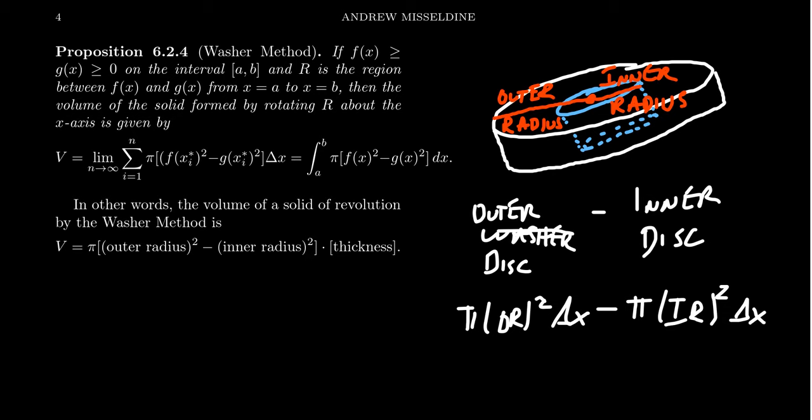And so notice that this expression, both terms are divisible by pi, we can factor that out. Both of them have the exact same thickness, this delta x. And so if we factor this thing, we end up with pi times the outer radius squared minus the inner radius squared times delta x.